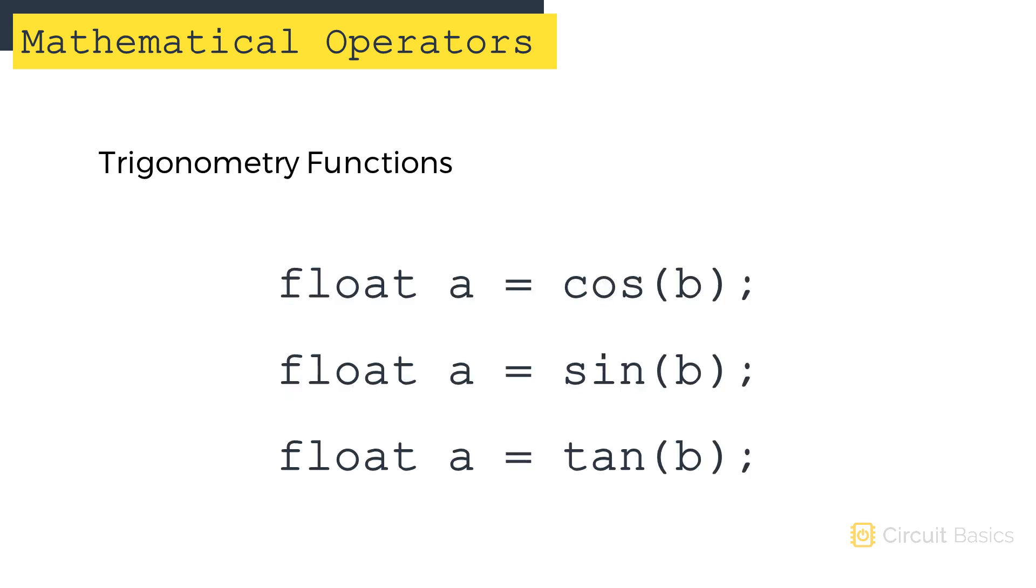The Arduino can do more advanced math too, like trigonometry. The Arduino has built-in functions for calculating the cosine, sine, and tangent of an angle. The trig functions take a float value as a parameter in radians and return the value as a float. So b is in radians.